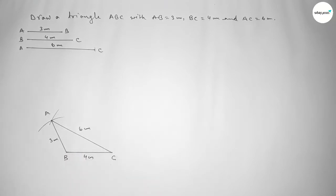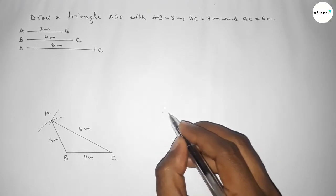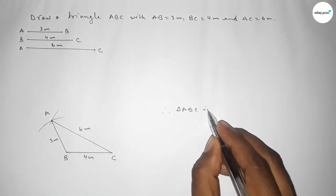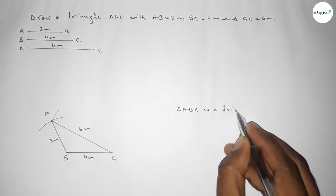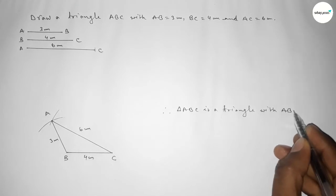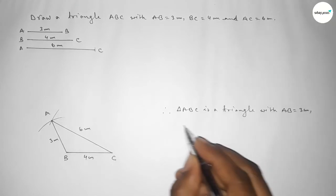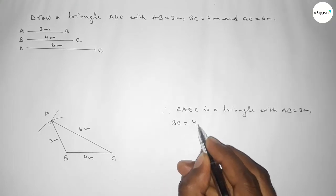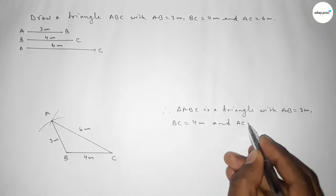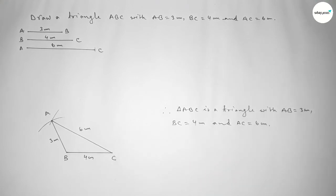Therefore triangle ABC is constructed with AB equal to 3 centimeter, BC equal to 4 centimeter, and AC equal to 6 centimeter. That's all — thanks for watching. If this video is helpful to you, please share it with your friends. Please like, comment, and share the video.